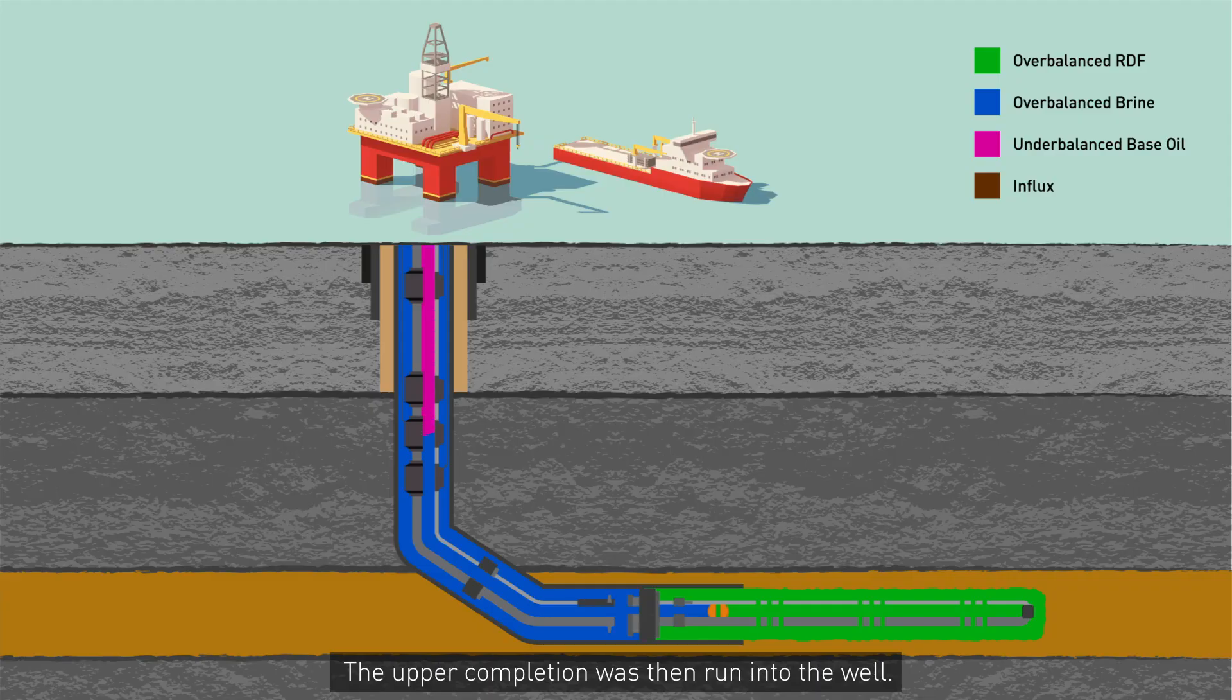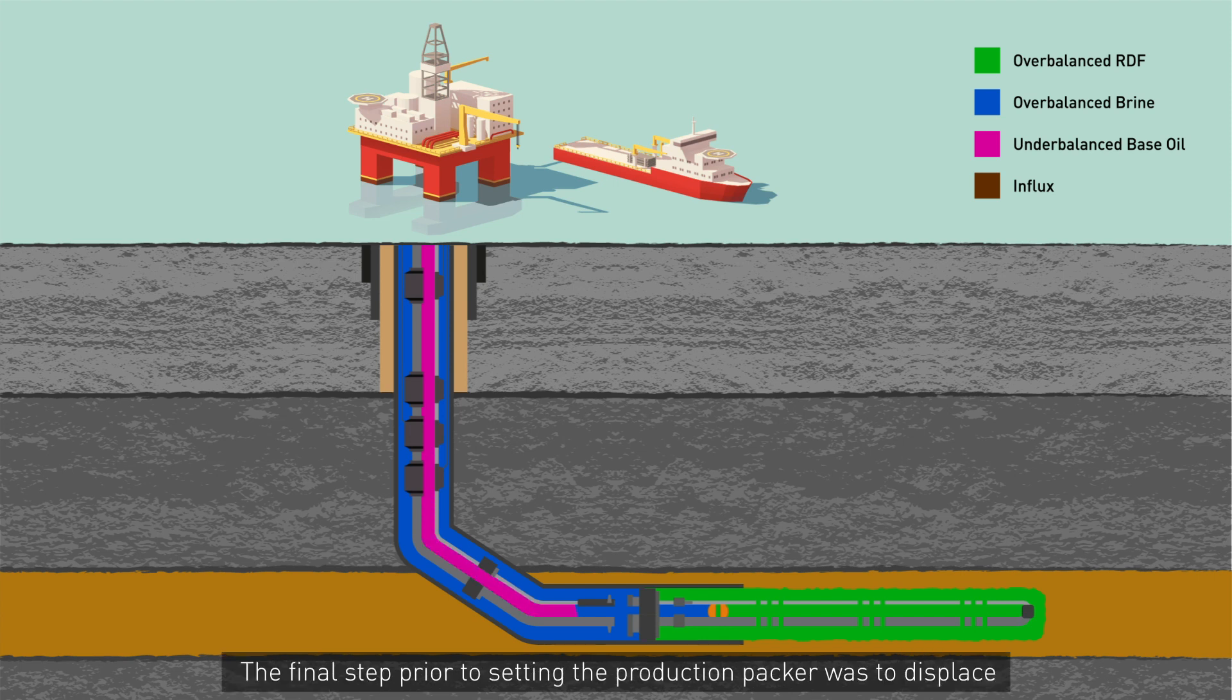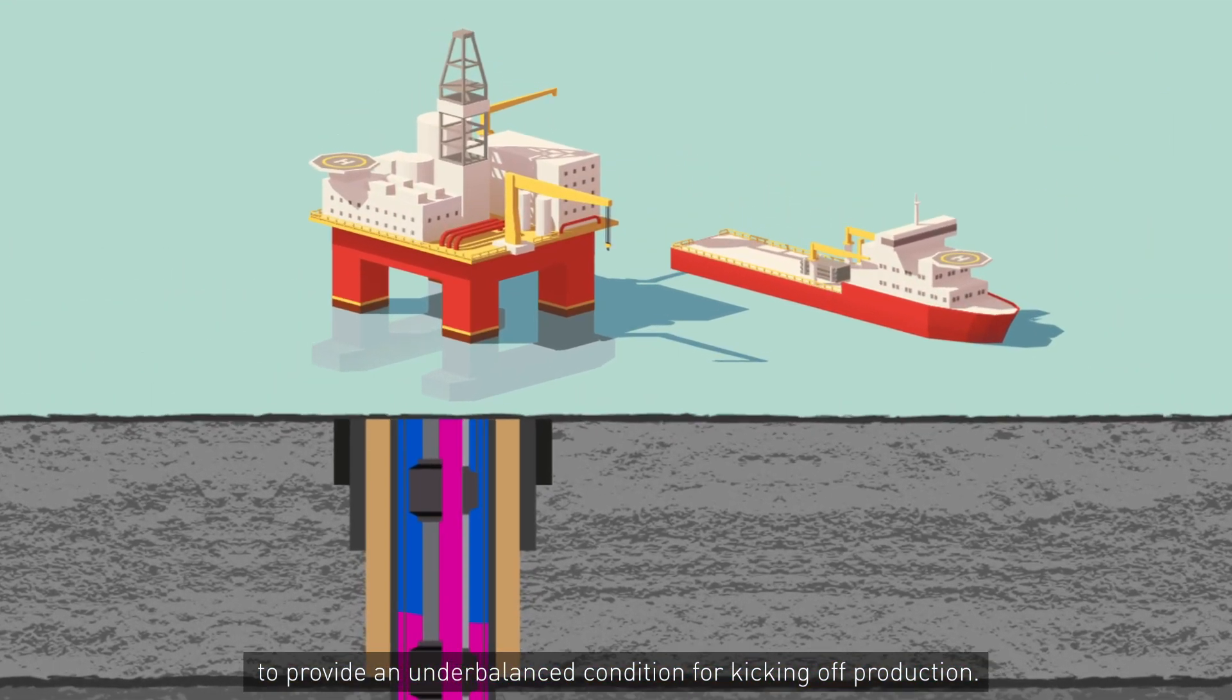The upper completion was then run into the well. The final step prior to setting the production packer was to displace the well above the liner top packer to base oil to provide an under-balanced condition for kicking off production.